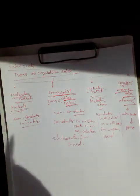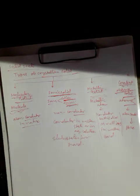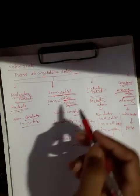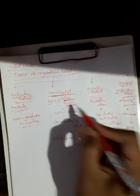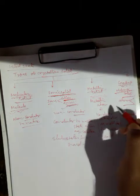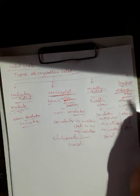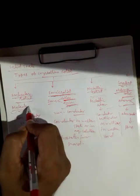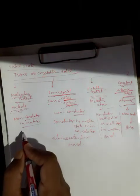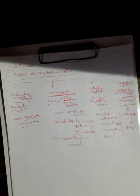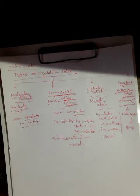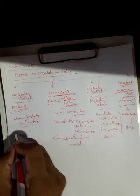The melting points of ionic, metallic, and covalent solids are high, but molecular solids have comparatively lower melting points.